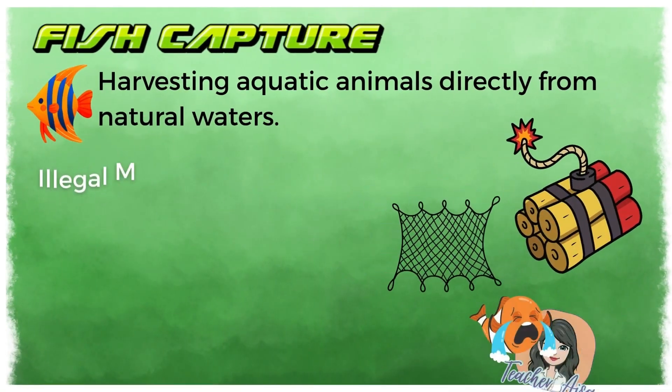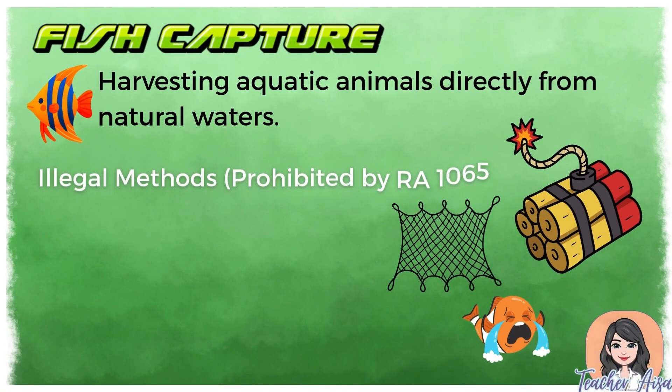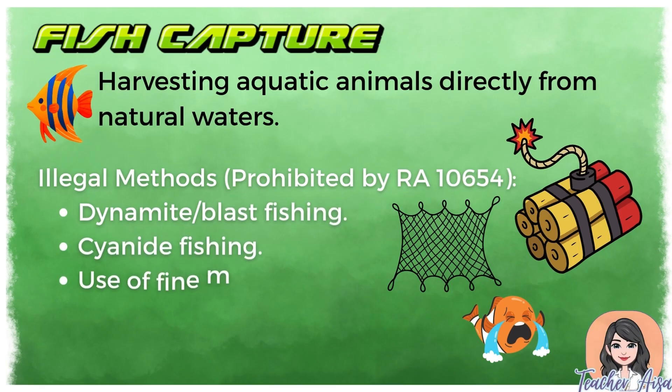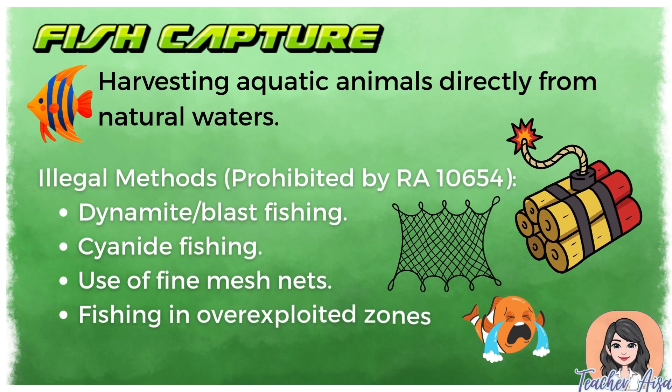Fish capture is the harvesting of aquatic animals from natural waters. It includes municipal fishing using small boats and traditional methods, and commercial fishing with larger vessels for bigger catches. Republic Act No. 10654 prohibits illegal practices like dynamite fishing, cyanide fishing, fine mesh nets, and fishing in overexploited zones to protect young fish and prevent resource depletion.